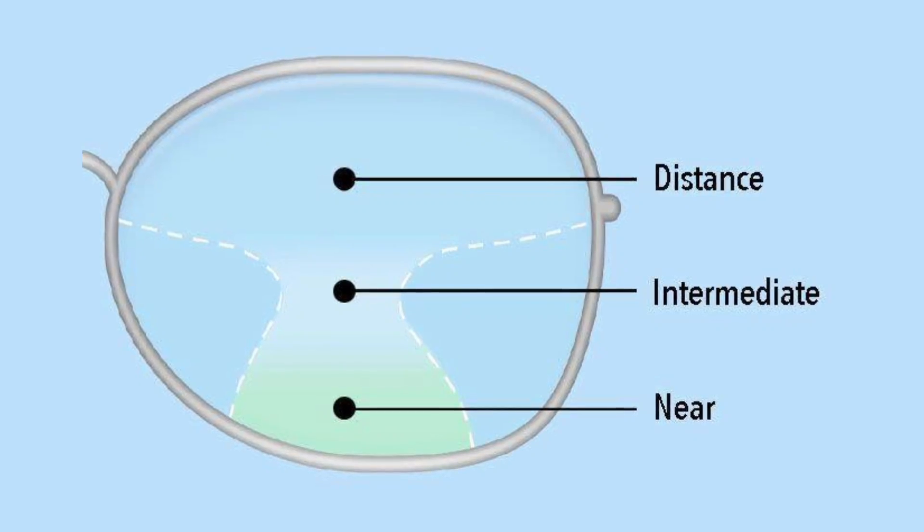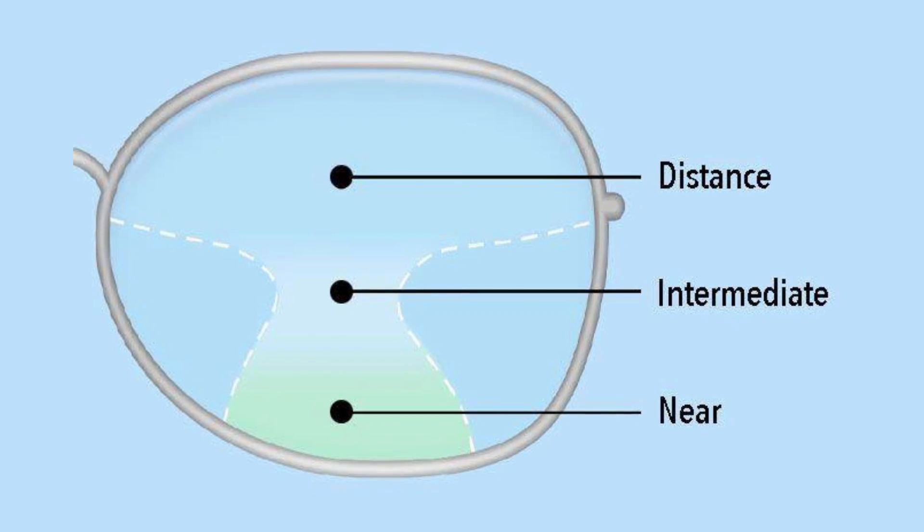A progressive lens means it doesn't have the same power across the whole lens. A normal spherical lens will have one curve across the whole thing, whether it's a positive or negative lens, focusing or spreading the light out. But progressive lenses have different powers across different parts of the lens, with the top having a little less optical power and the bottom being a little bit stronger.